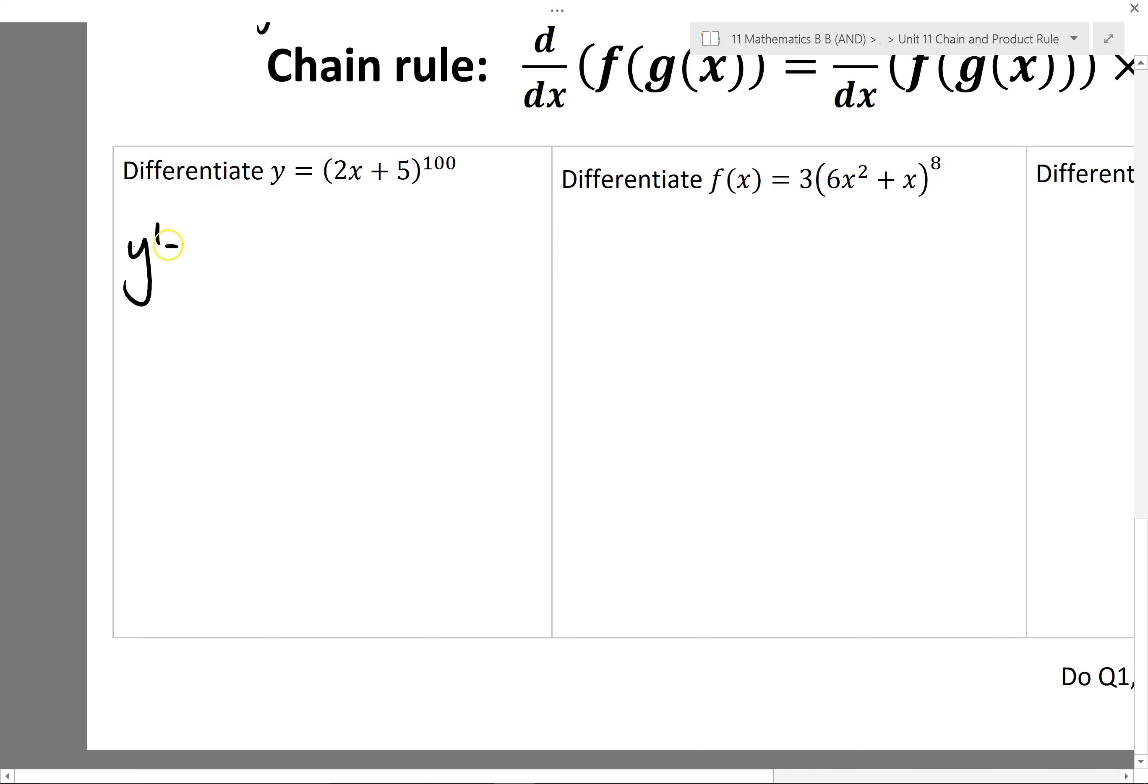But I could differentiate it again by imagining this as a block, multiplying by 100, reducing the power by 1, and then looking inside the function and multiplying by the derivative of that inside function. So I really got 100 times this big thing, multiplying by 2, and 100 times 2 is 200. That's my derivative.